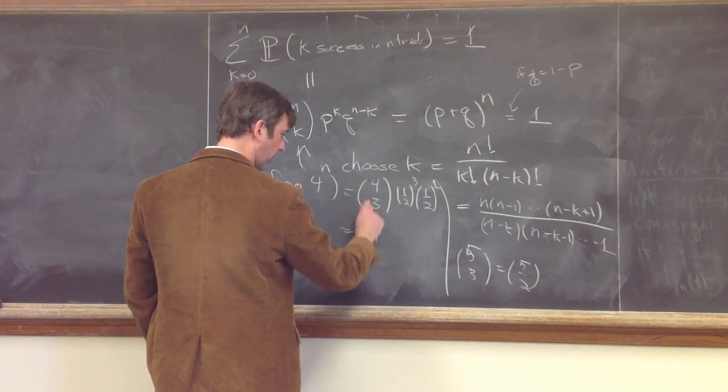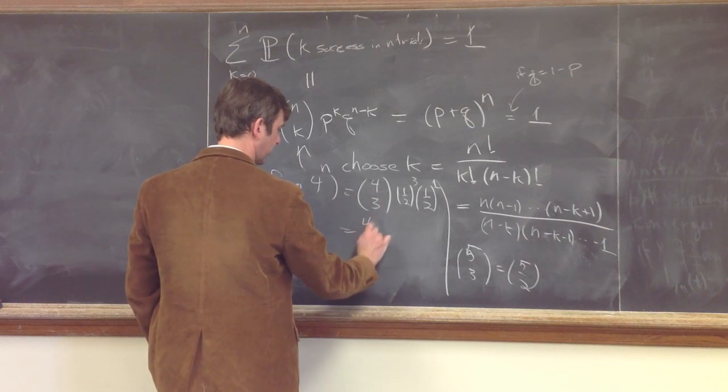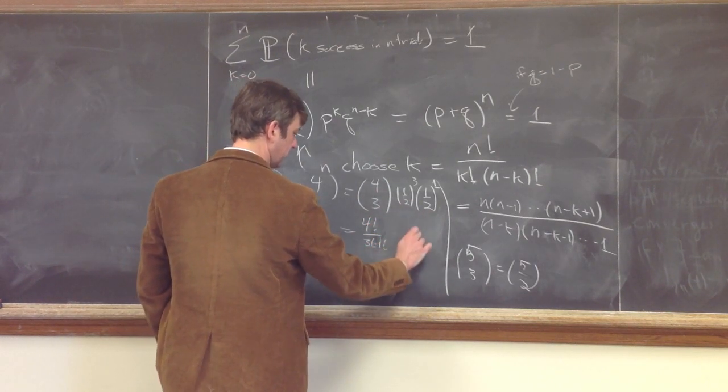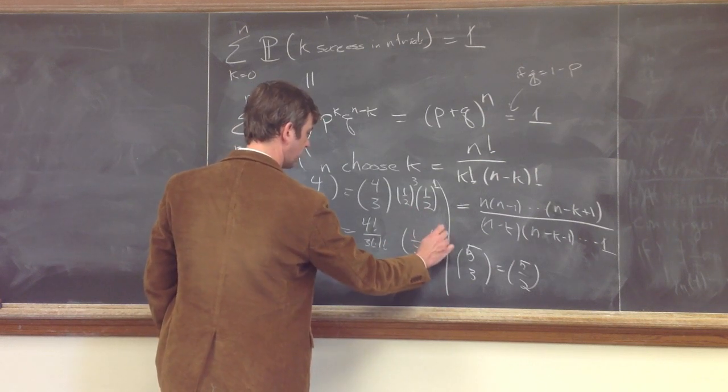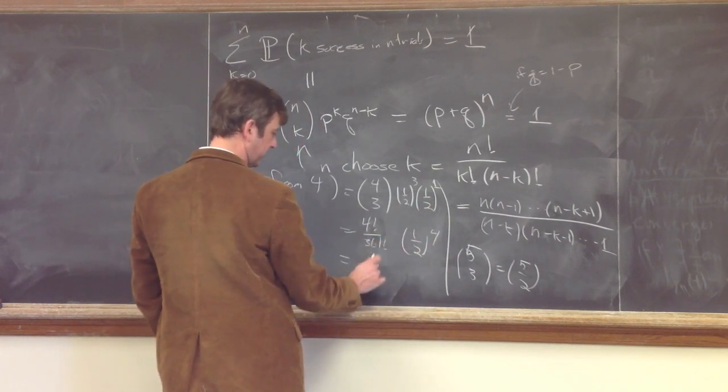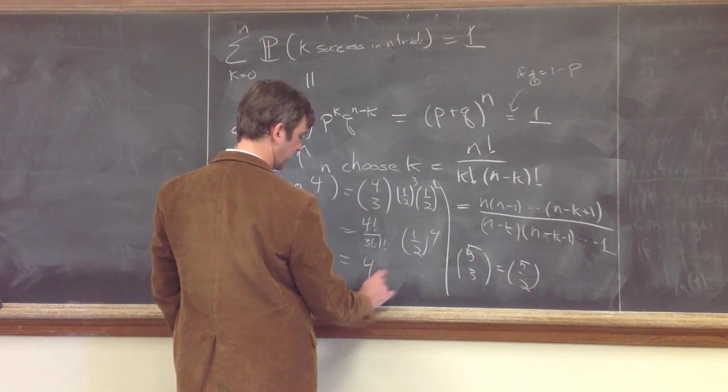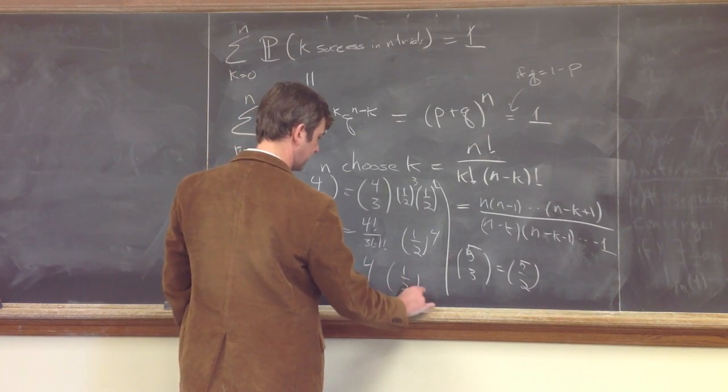And then this is of course 4, if you write it out, because that's 4 factorial over 3 factorial 1 factorial, times 1 half to the 4, and if you cancel things out, the 3 factorial cancels the 3, the 2, the 1 up here, and this just becomes 4 times 1 half to the 4.